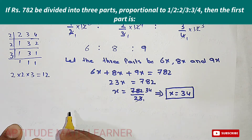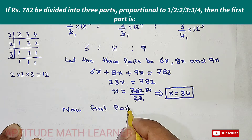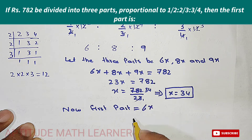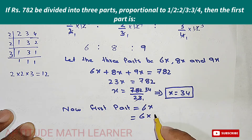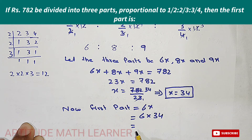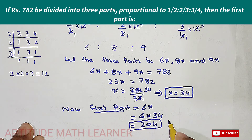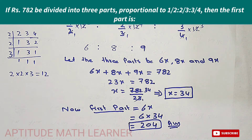The question asks for the first part, which we took as 6x. Therefore, the first part = 6 × 34 = 204. So ₹204 is the first part and that is our answer. I hope you have completely understood the method. Thank you very much.